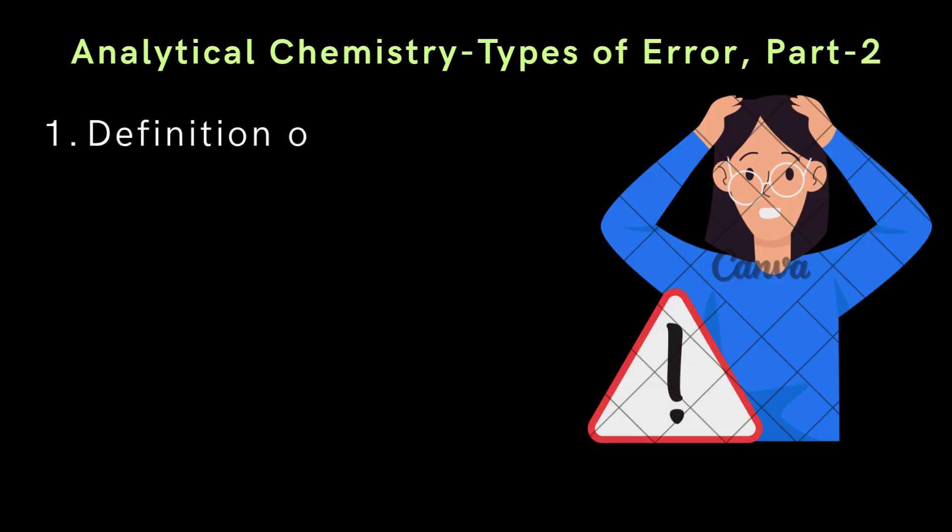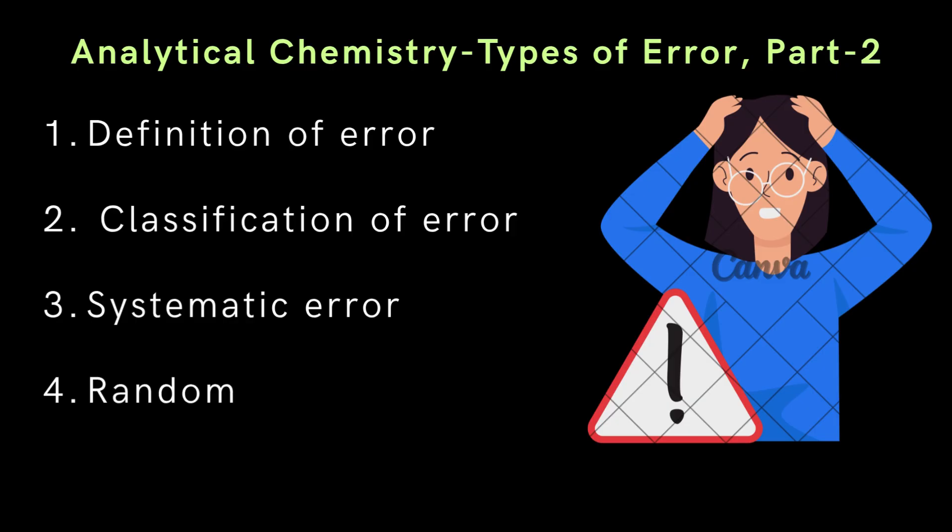This second part of the Analytical Chemistry Errors section covers definition of error, classification of error, systematic error, random error, and how random error can be presented in the form of normal distribution curve.